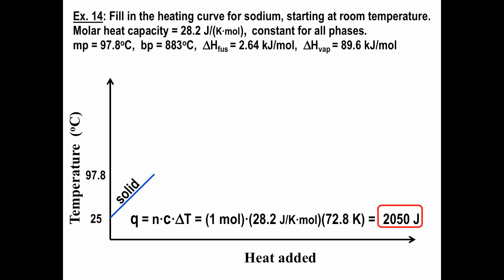Now we're at 97.8 degrees Celsius. The solid starts to turn into a liquid. We continue adding heat while the solid melts. The enthalpy change for that process is given by Q equals N times delta H, and both of these are for fusion. We're dealing with one mole, and the enthalpy change for fusion for sodium is 2.64 kilojoules per mole, which is 2,640 joules per mole. So 2,640 joules for the phase change, just keeping everything in the same units.